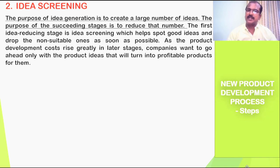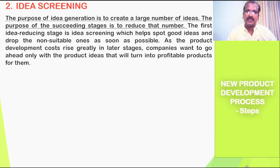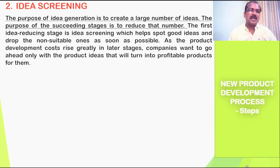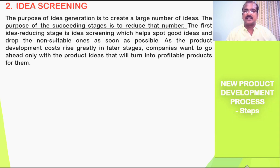The second step is idea screening. The purpose of idea generation is to generate a large number of ideas; the purpose of succeeding stages is to reduce that number. As seen with IBM's Innovative Jam, 46,000 ideas were reduced to just 10. Idea screening helps spark good ideas and drop the non-suitable ones as soon as possible — not poor ideas, but ideas that may not be suitable for your particular organization.